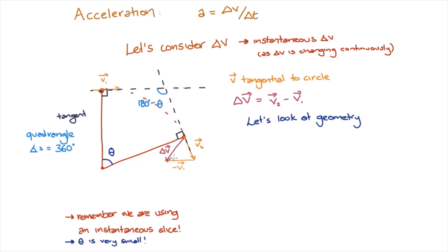Now we also know that minus v1 in our triangle is parallel to the dashed line extension of v1, our original vector. Since angles on a line must sum to 180 degrees, we know that this angle here must be theta. And since we have two parallel lines, the angle between v2 and minus v1 will also be theta. This is known as the alternate angles rule.